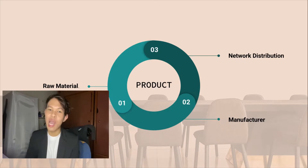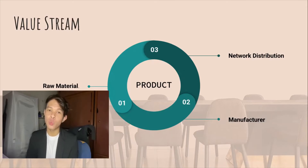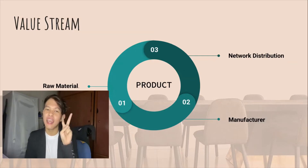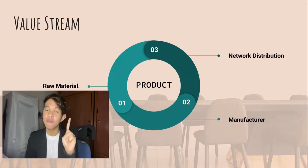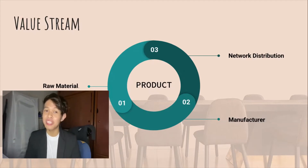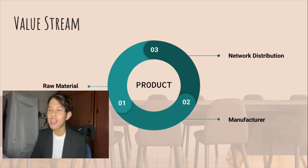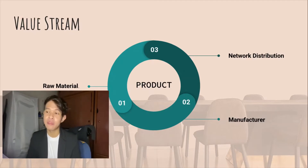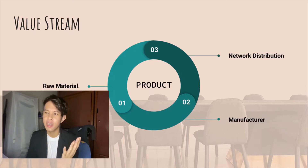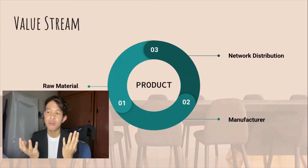Now I will proceed to the next part, which is value streams. For value streams, we divided this into two categories: the first one is the product industry and the second one is the service industry. For this slide, I would like to present the first one, which is product industry. But before I proceed, let's look at the definition of value stream mapping. Value stream mapping is also known as material and information flow mapping. It is a lean management method to analyse the current state and design a future state for the series of events that take a product or service from the beginning of a specific process until it reaches the customer.